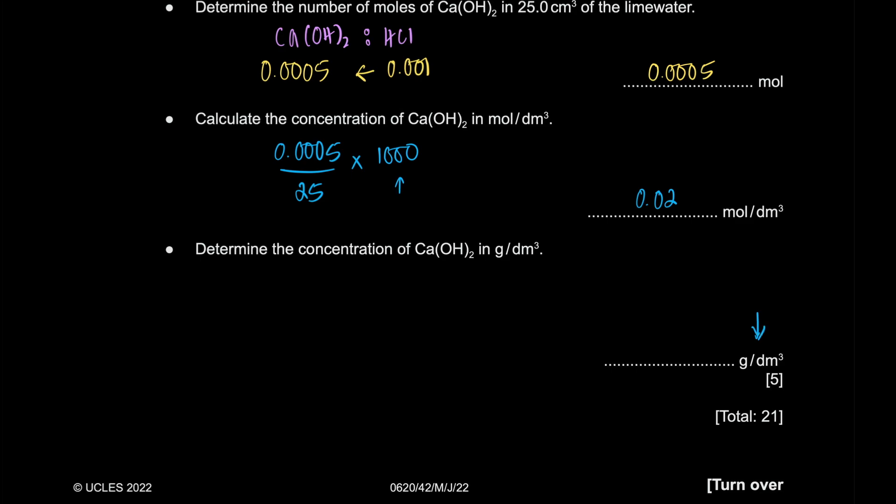Now they want us to answer the same concentration in grams per decimeter cube. And people find this confusing for some reason. So what does this mean? 0.02 moles per decimeter cube. That means for every one decimeter cube, you have 0.02 moles of calcium hydroxide present. How much in grams is 0.02? Well, I can figure that out if I knew the MR and just do that. So what's the MR? I believe calcium is 40. Oxygen is 16. Hydrogen is one with the two of these. So multiply that for two. The answer comes out to 1.48 grams per decimeter cube. Pretty easy.